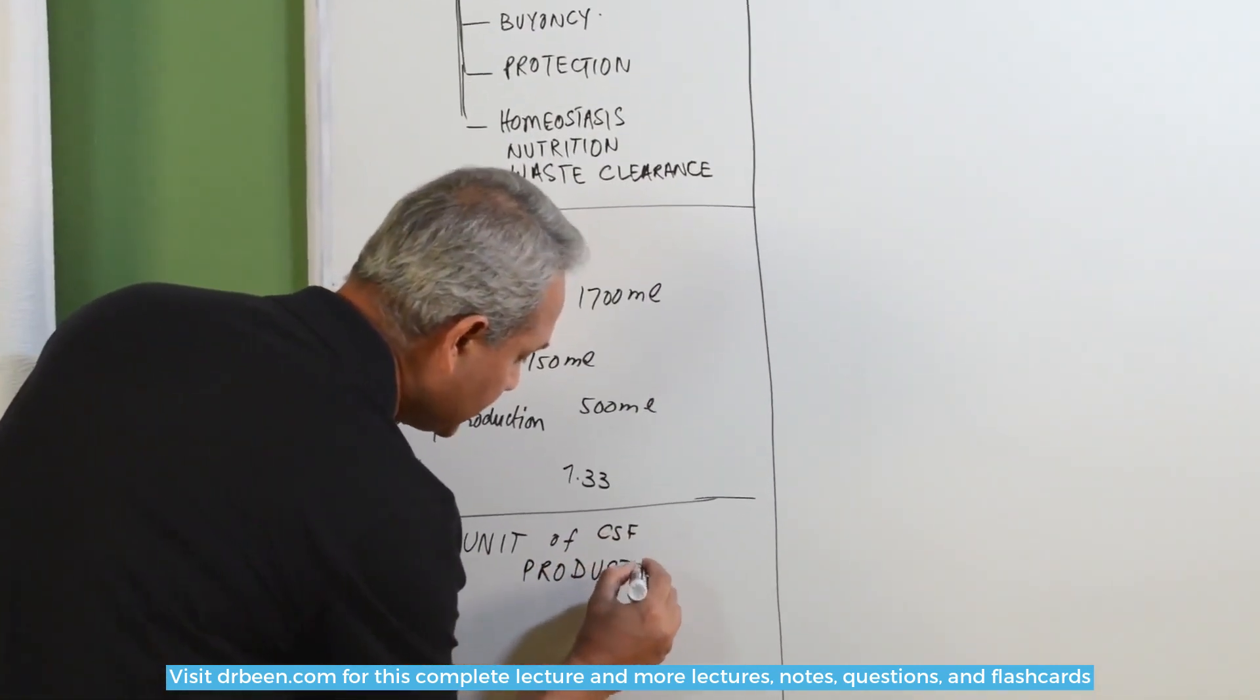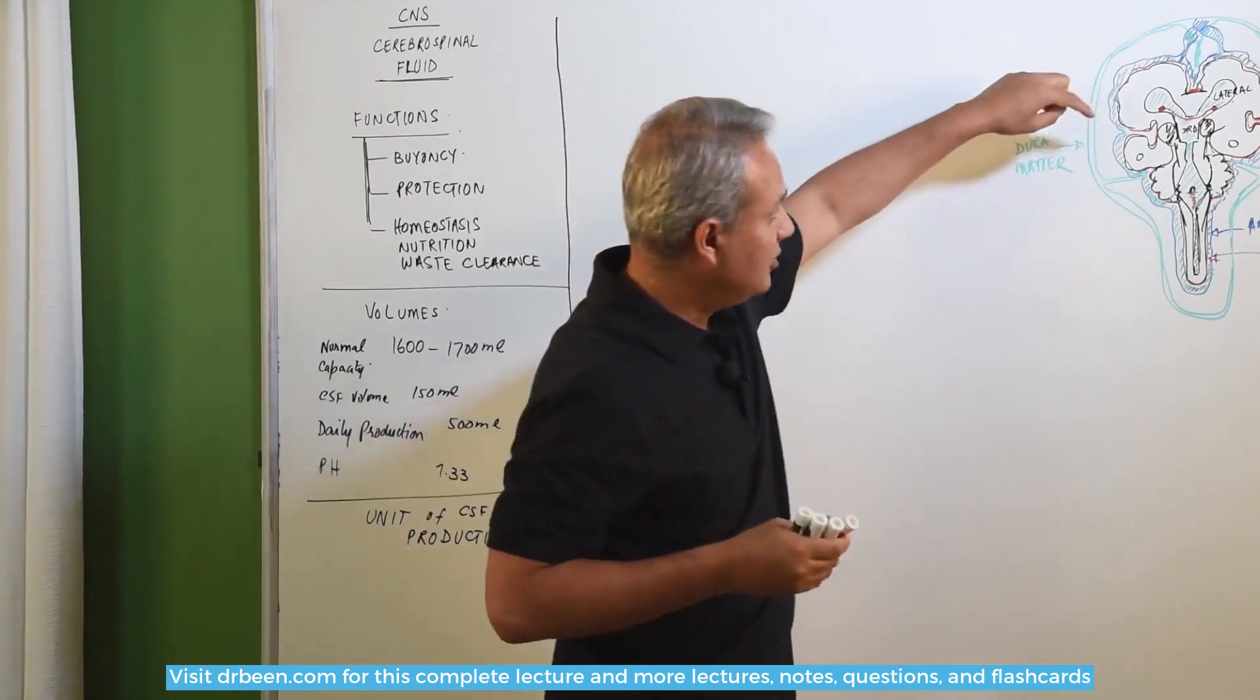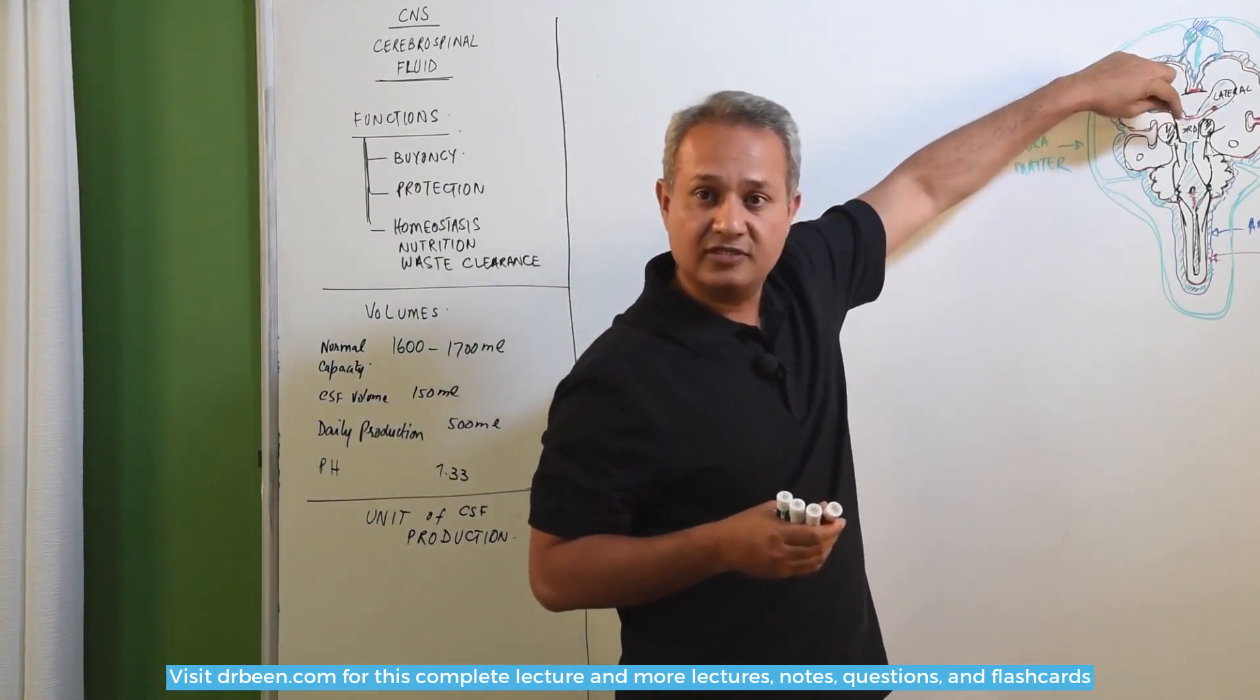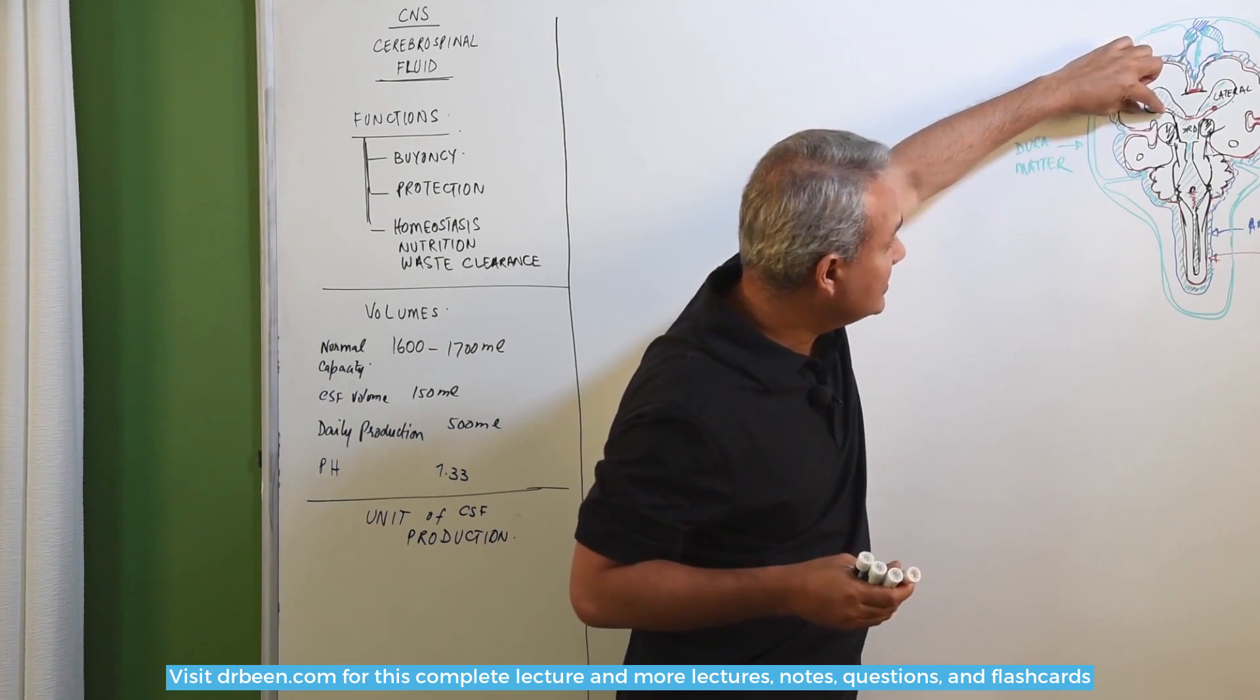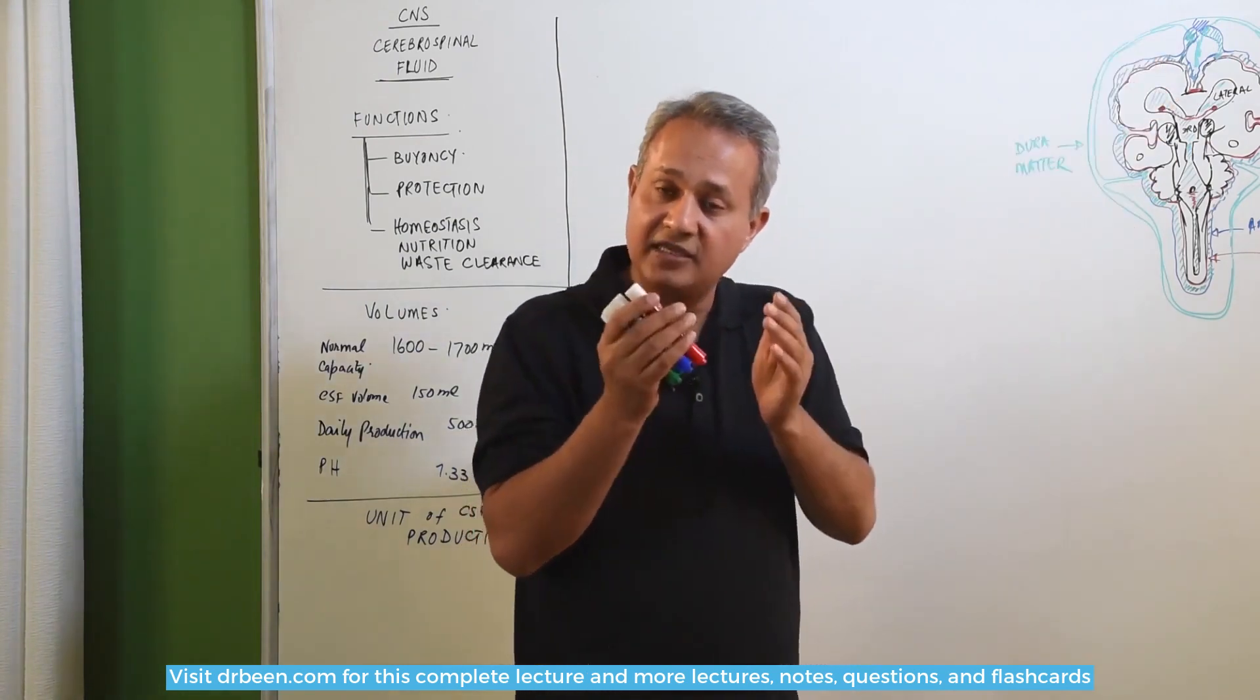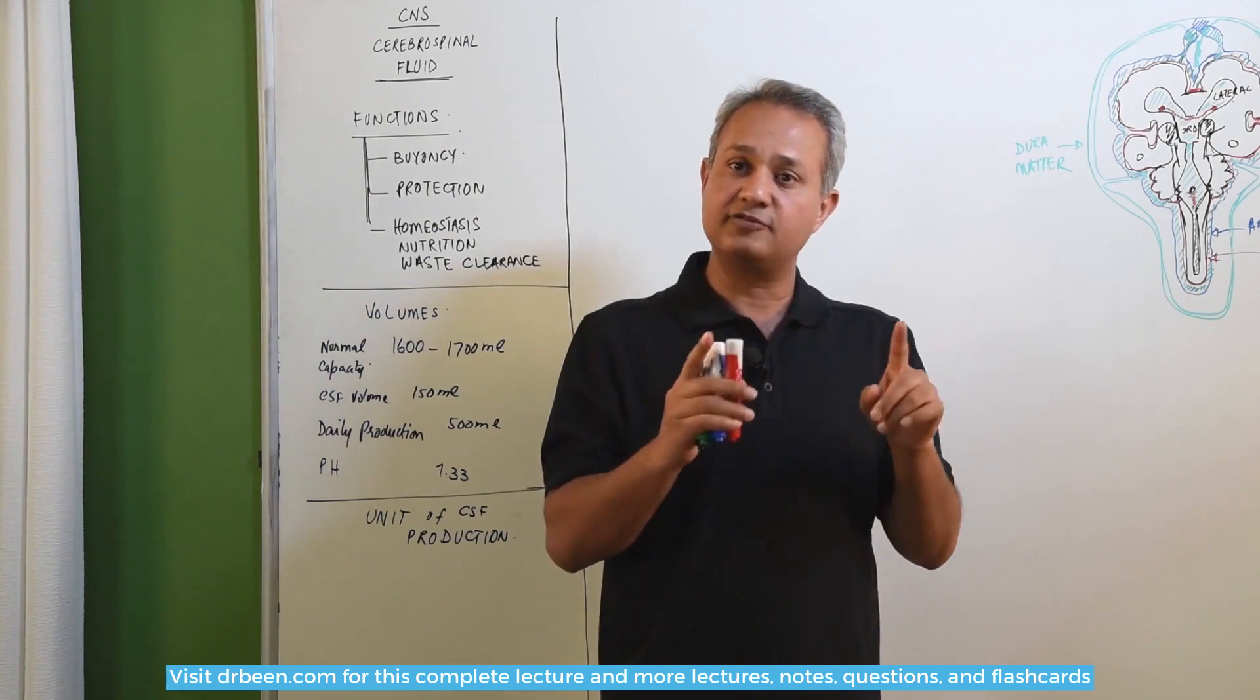This is a very simple unit. I am going to go to the diagram for a second. Look, here are the choroid plexuses. One blood vessel, a capillary, is surrounded by the ependymal cells. What are the ependymal cells? These are the cells that are lining the cavities of the brain. Remember, these are the epithelial cells of the neural tube.